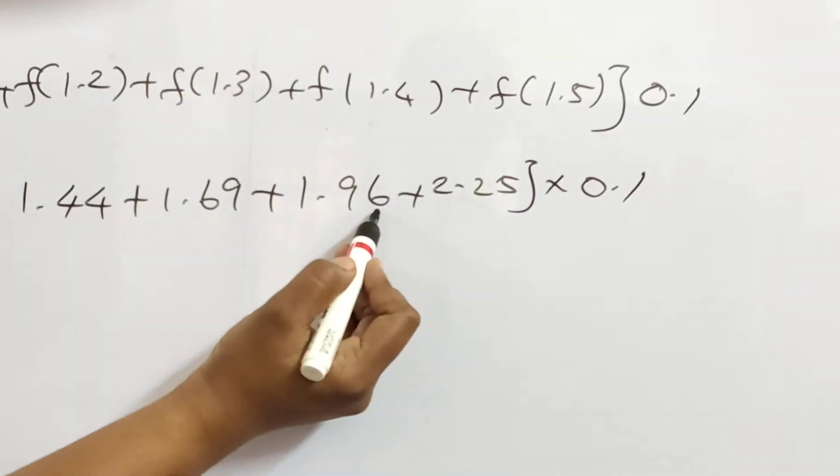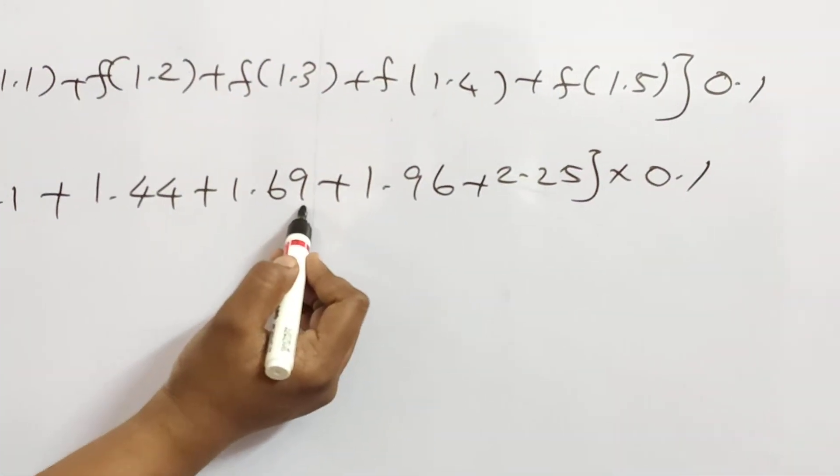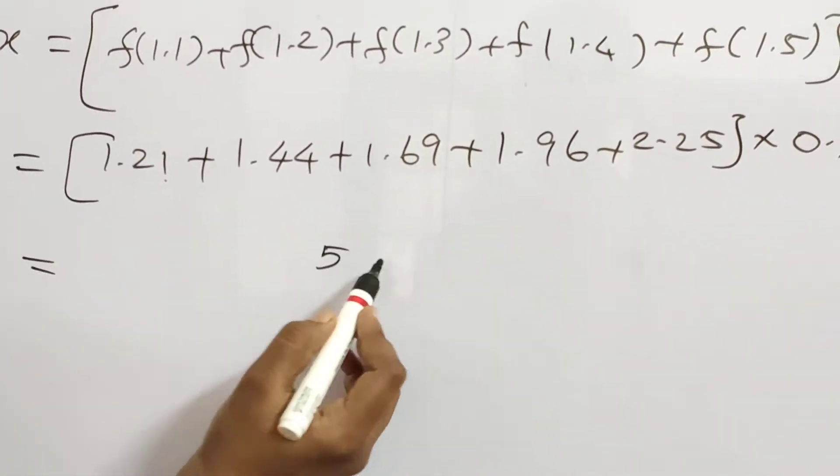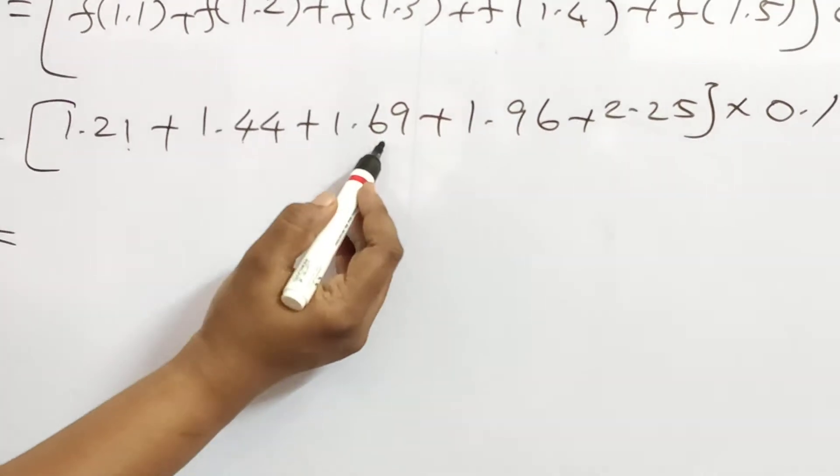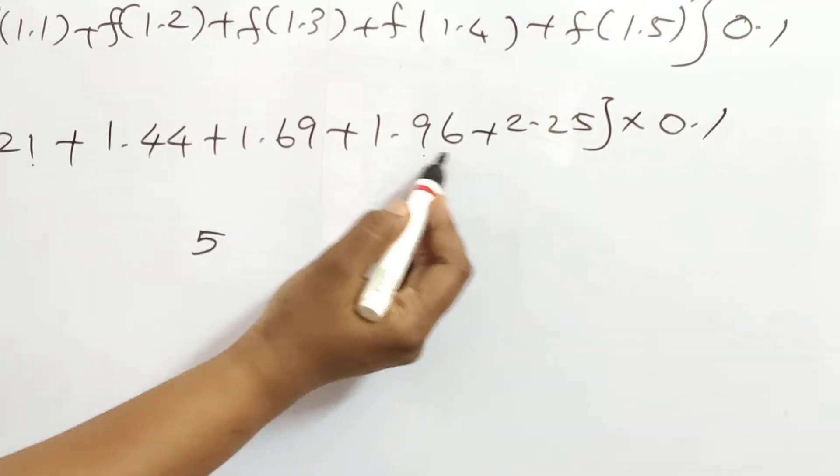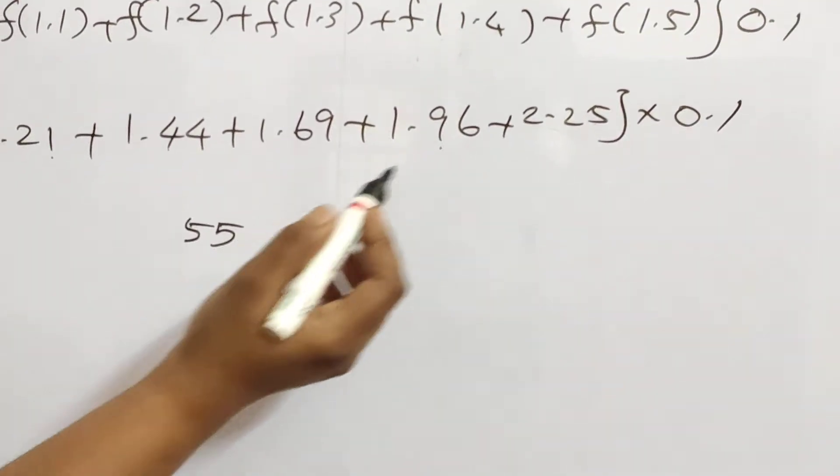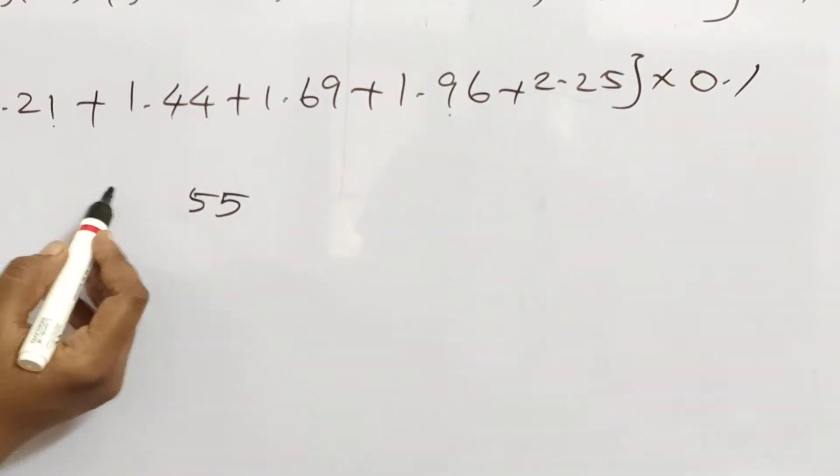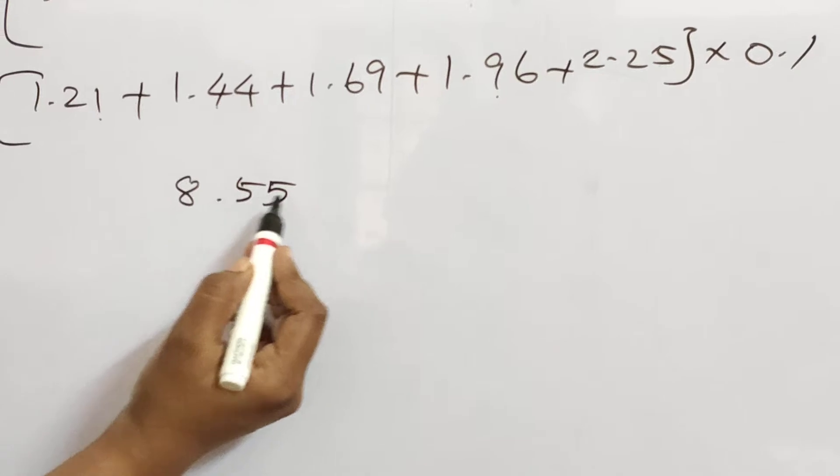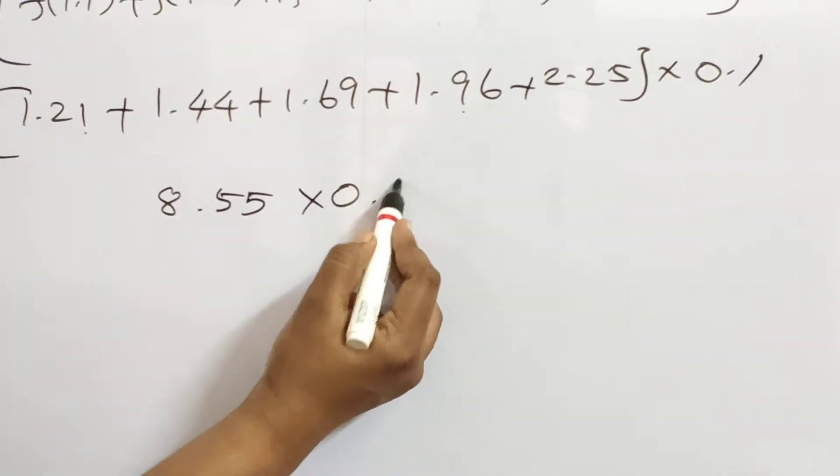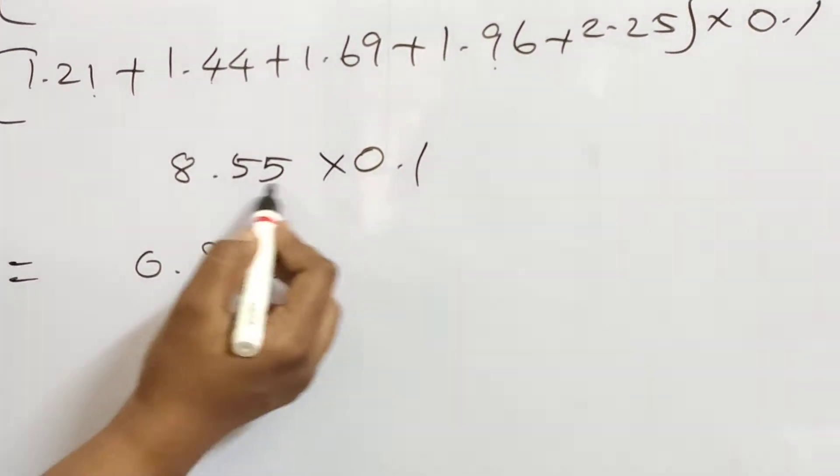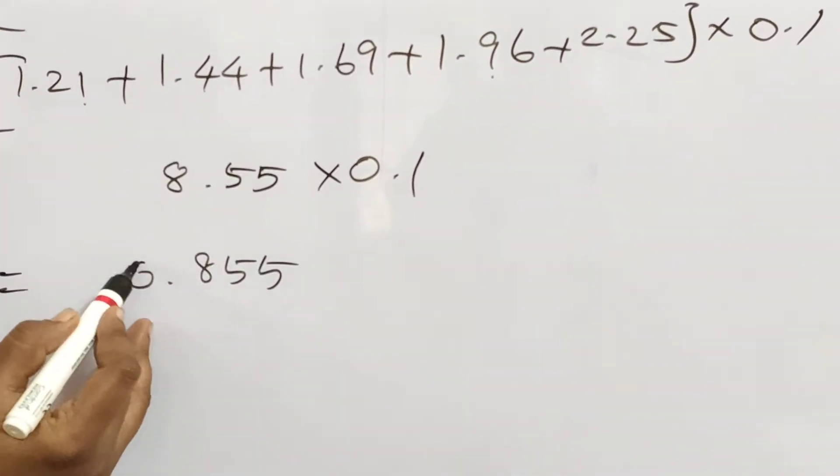After addition: 1.21 plus 1.44 plus 1.69 plus 1.96 plus 2.25 equals 8.55 into 0.1, which equals 0.855.